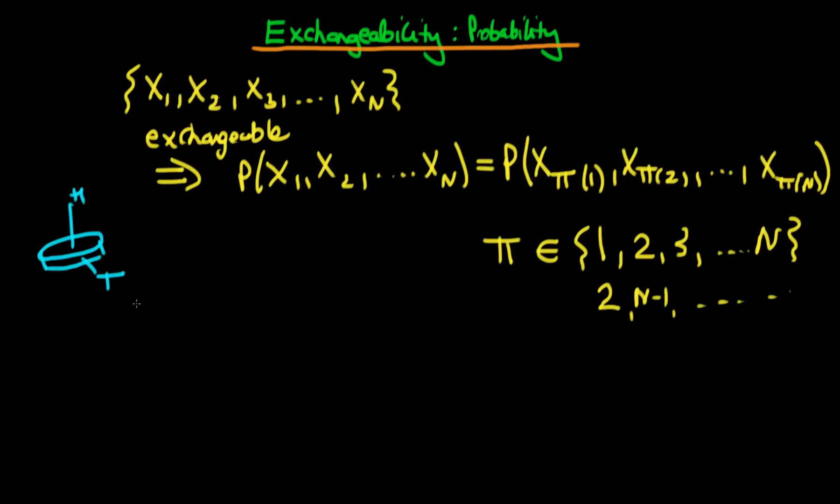So imagine that we have a sequence of throws of this particular coin. What we have is it comes up as 1 on the first throw, 1 on the second throw, 0, 0 (tails on the third and fourth throw), and then finally it comes up as a head.